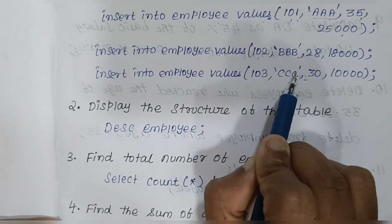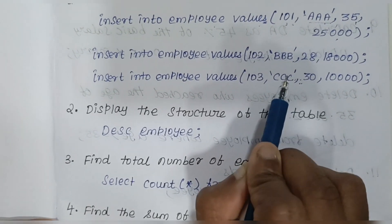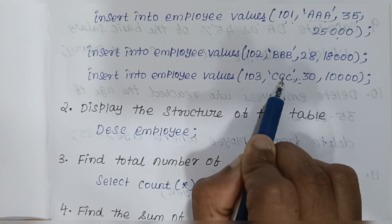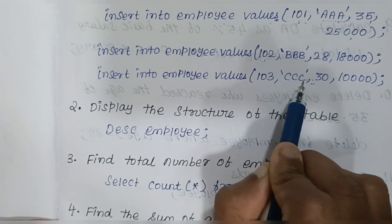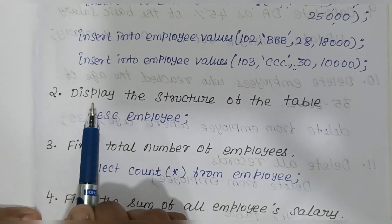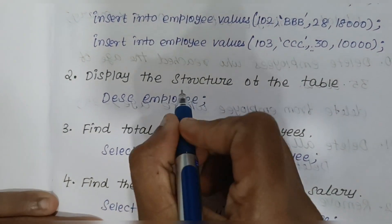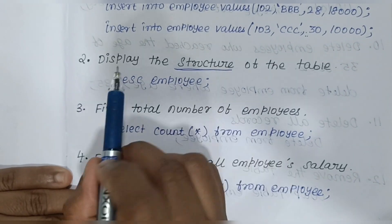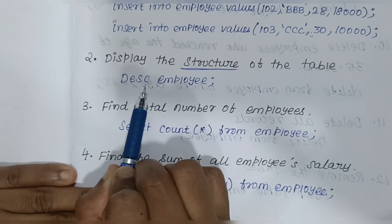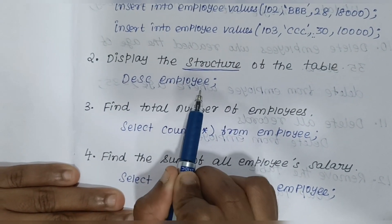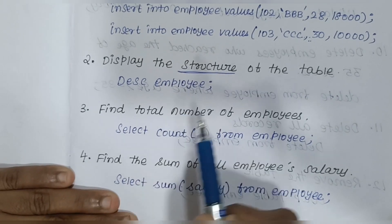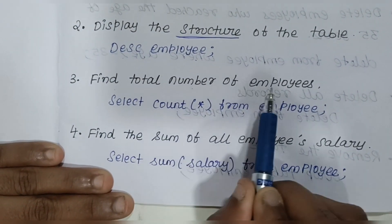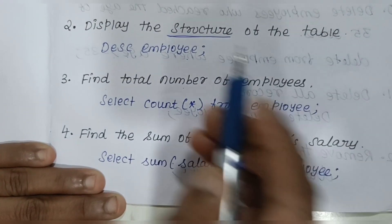To summarize: if they ask 'create the table', write only the CREATE statement; if they say 'develop the table', write both CREATE TABLE and INSERT records. The third query is to display the structure — 'structure' means you write DESC followed by the table name.